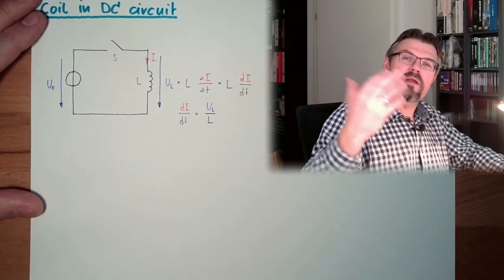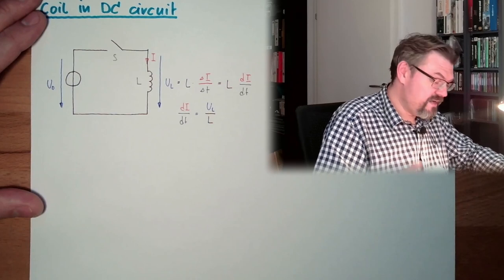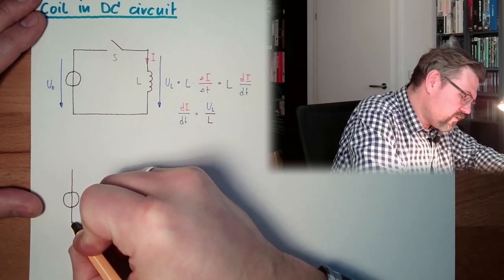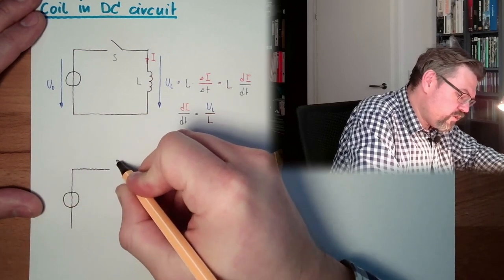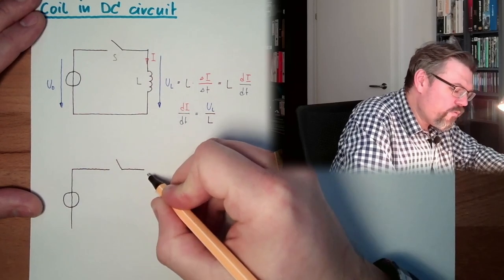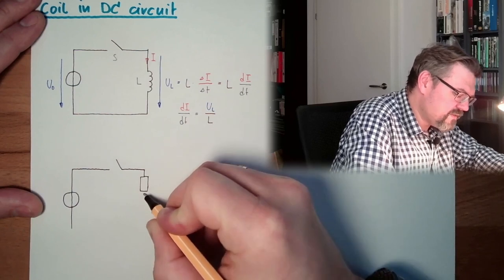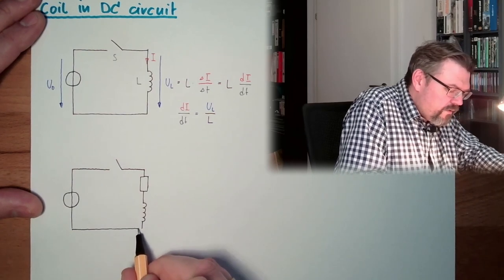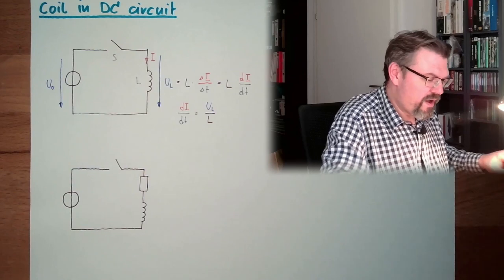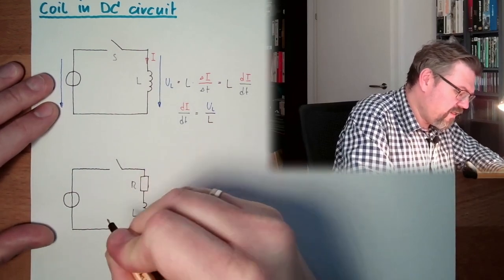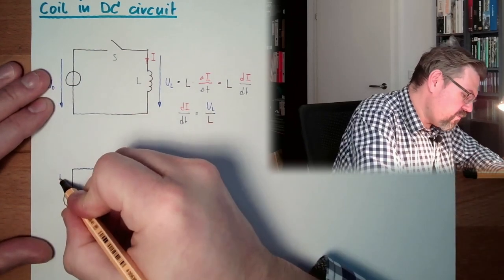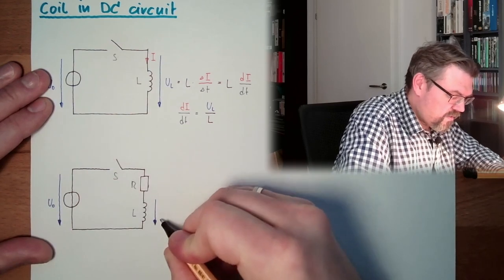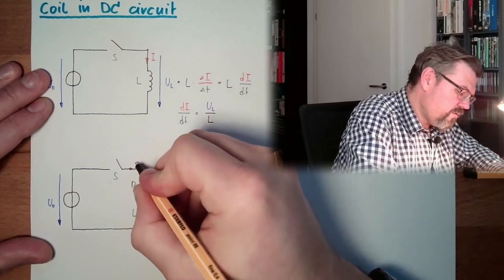So, if we now at least replace one element with a not ideal element, or with a model of a not ideal element, then we have... Let's stay with our ideal voltage source. Here we have a switch. And now we are summarizing all resistance of all the things in one resistor, which we also pack into our loop here. And so now we have an R, we have an L, we have still our switch, we have still our voltage source with our U0. We have still our UL here. We have still our current rushing through, our I.